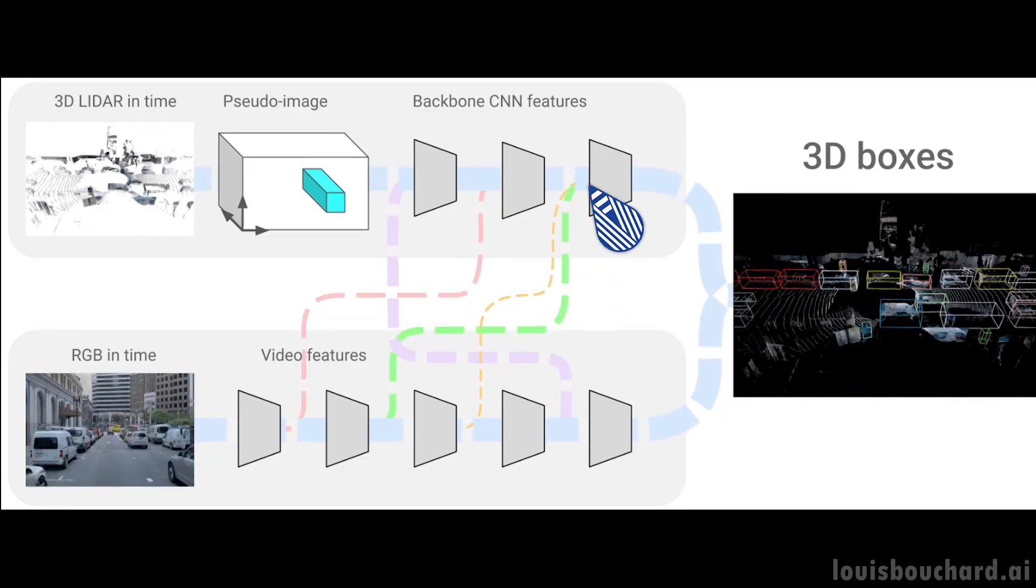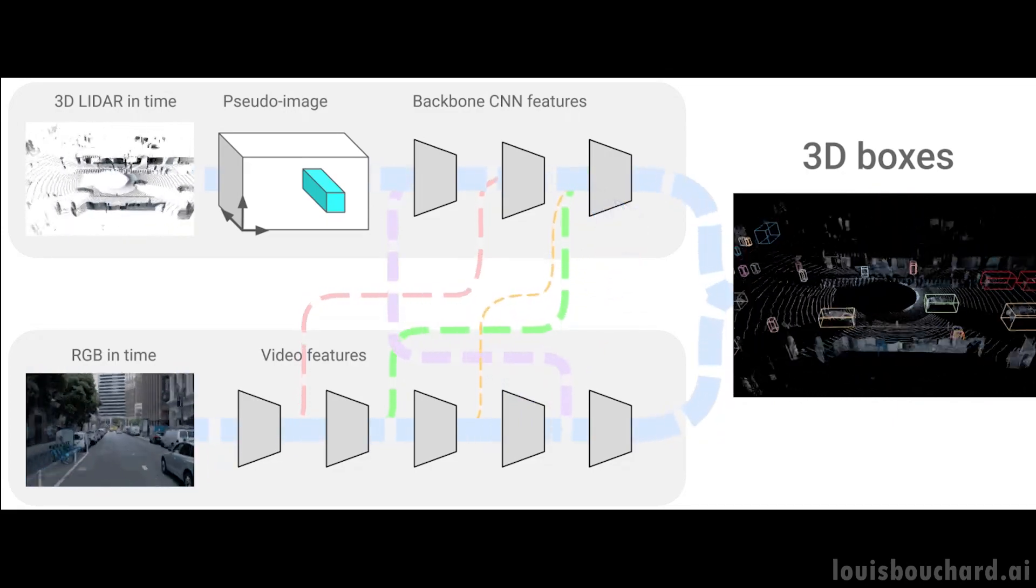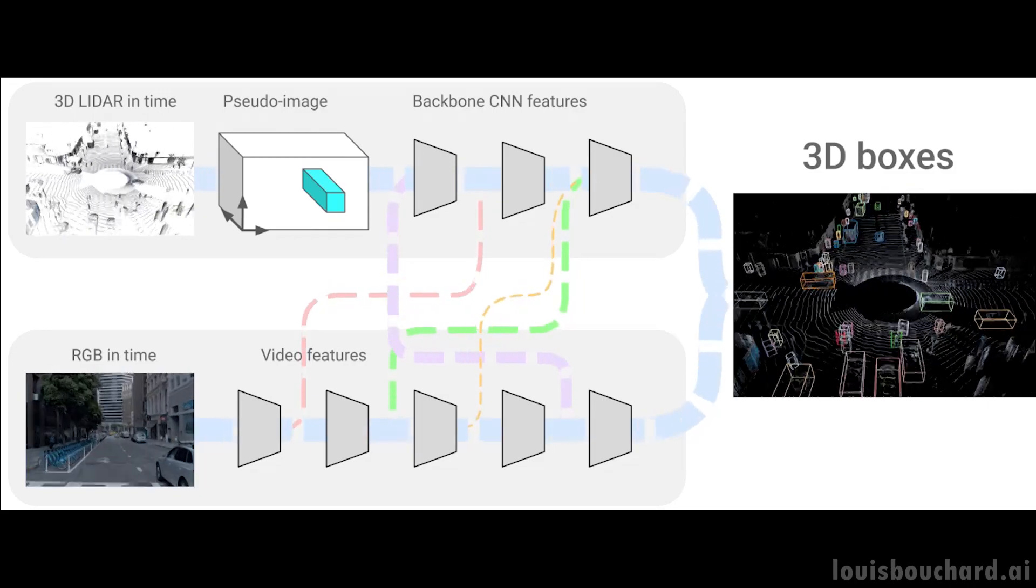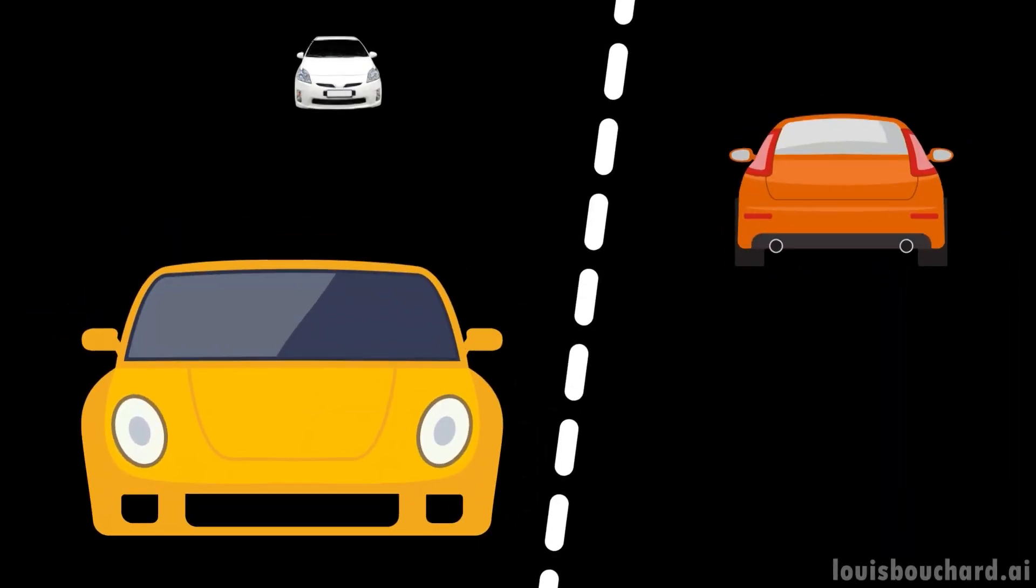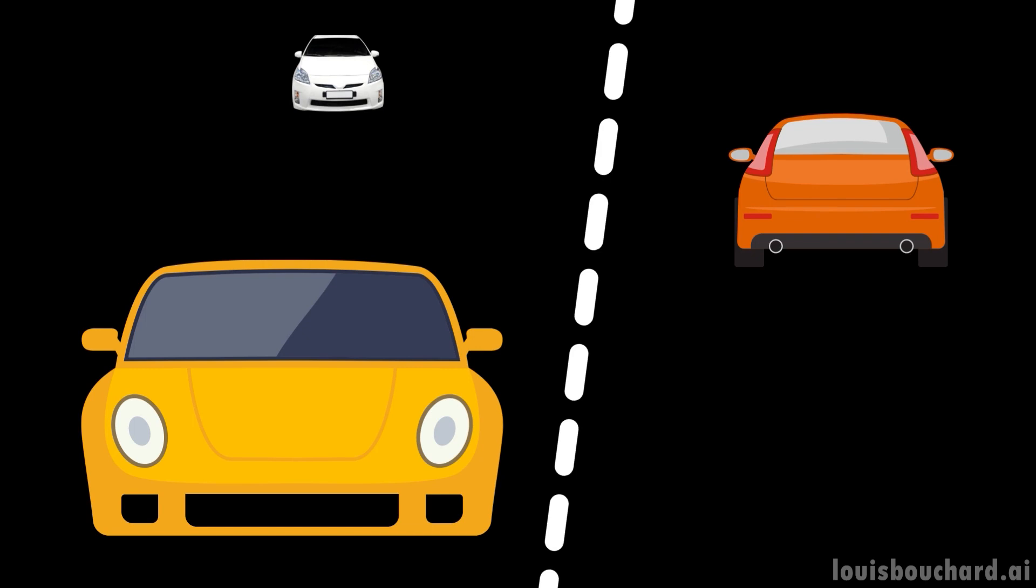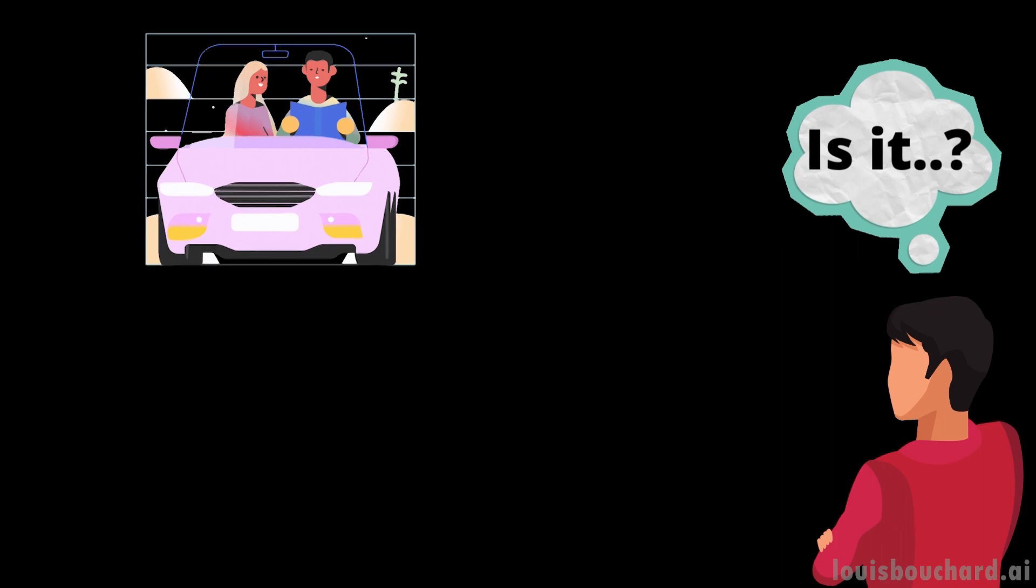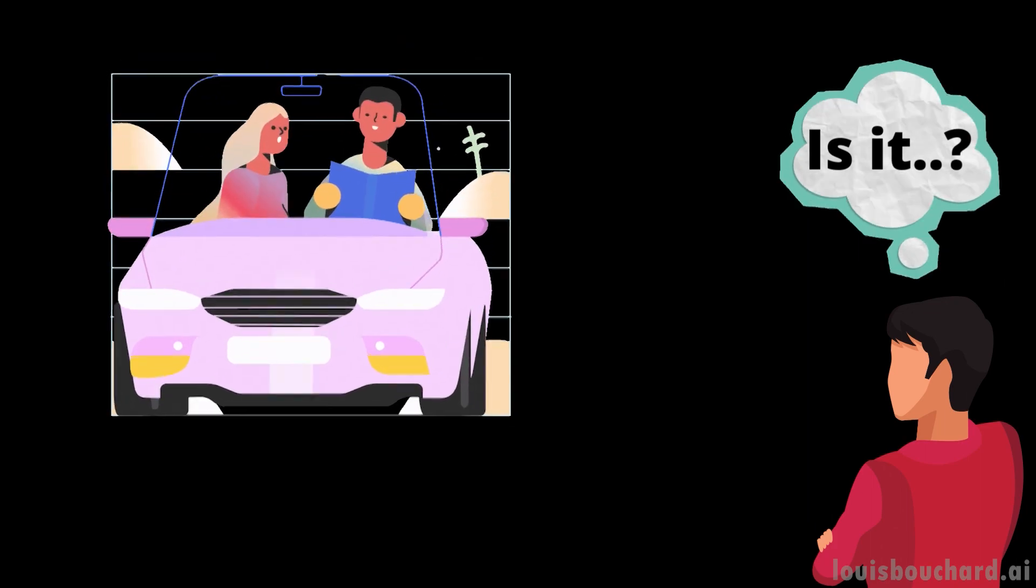This is mainly because when we take images, we have objects at various ranges in the shot and with different proportions. The car in front will look much bigger than the car far away, but we still need to consider both. Like us, when we see someone far away and feel like it's our friend but still wait closer to be sure before calling his name, the car will lack details for such far away objects.